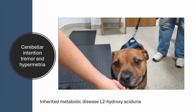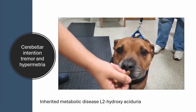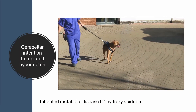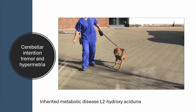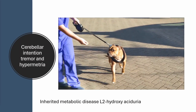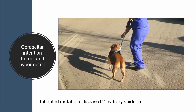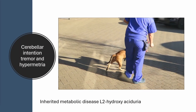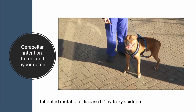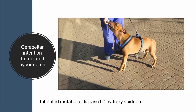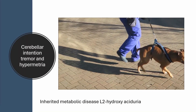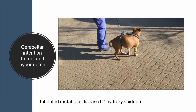The intention tremor is characteristic of cerebellar disease. In the video, you can see that hypermetric action also affecting the pelvic limbs, along with a wide-based stance, which is characteristic of a cerebellar problem. The handler circles the dog so we can really see that hypermetric action.